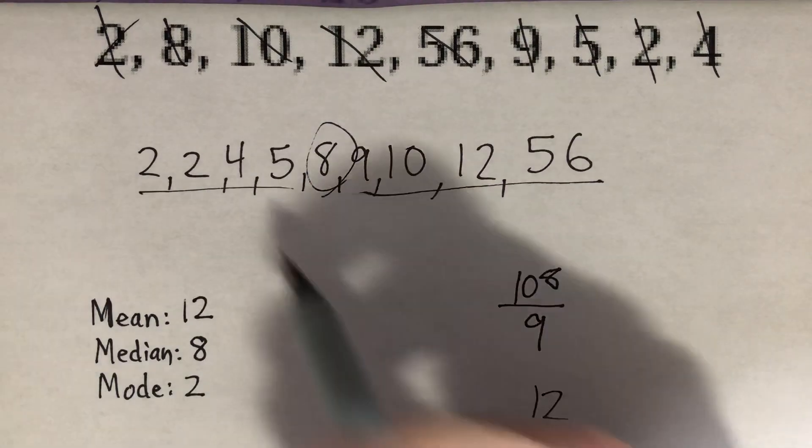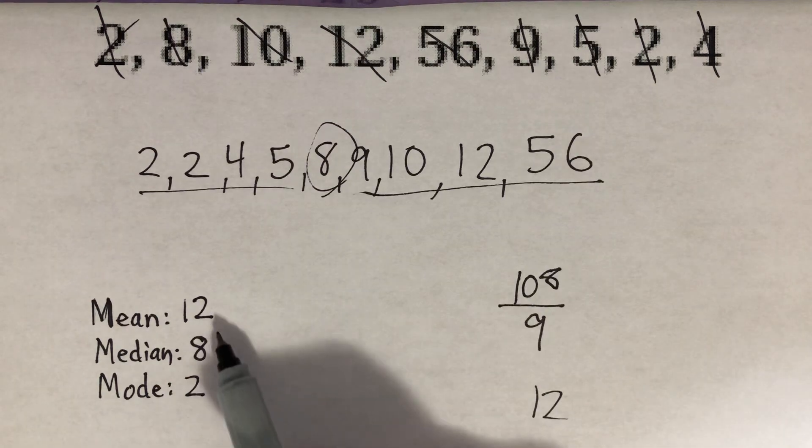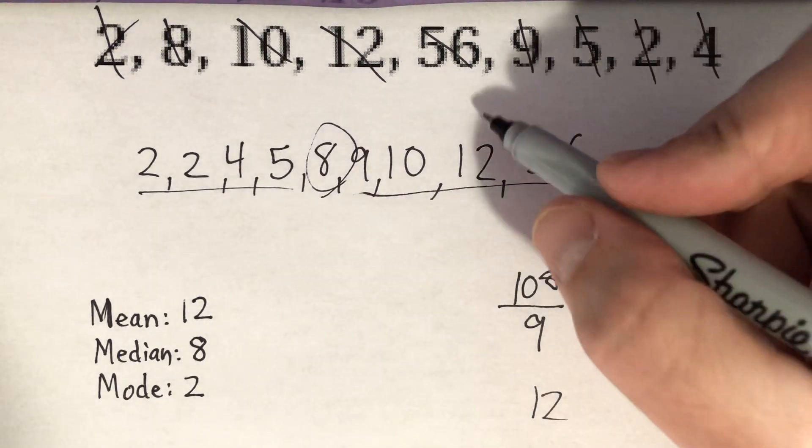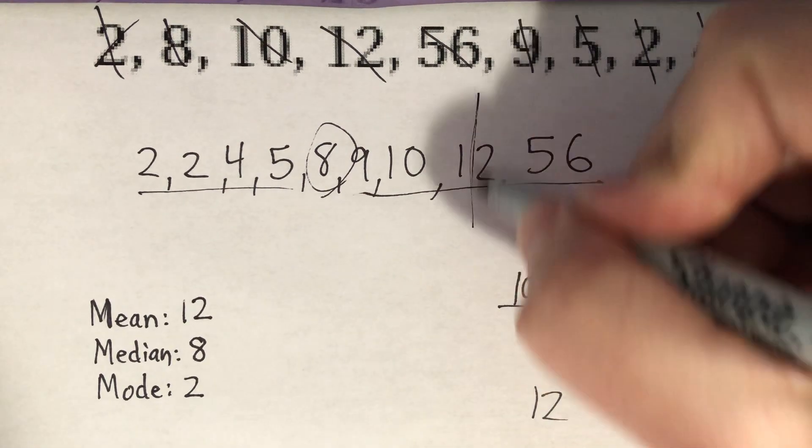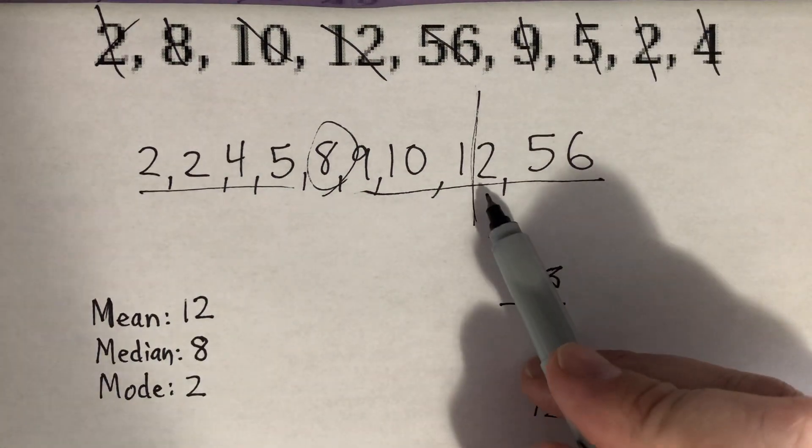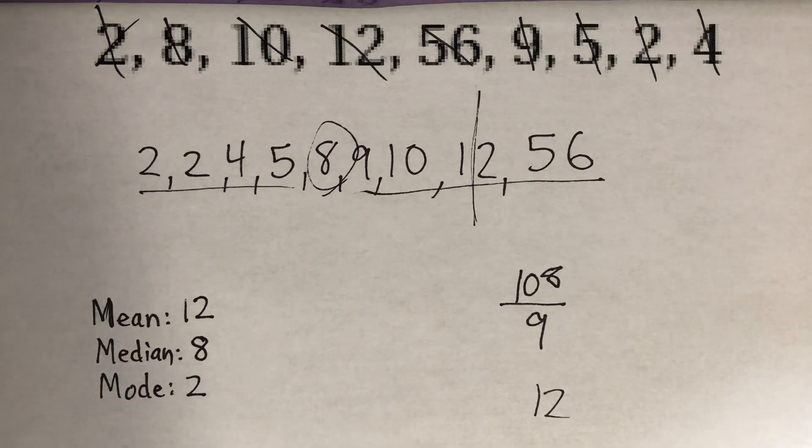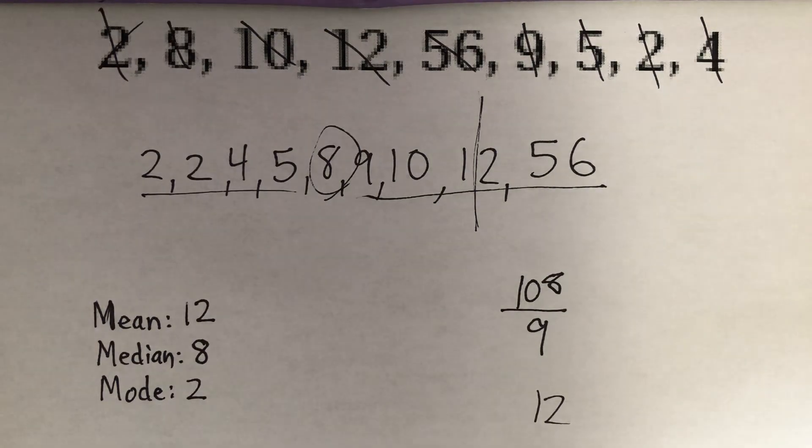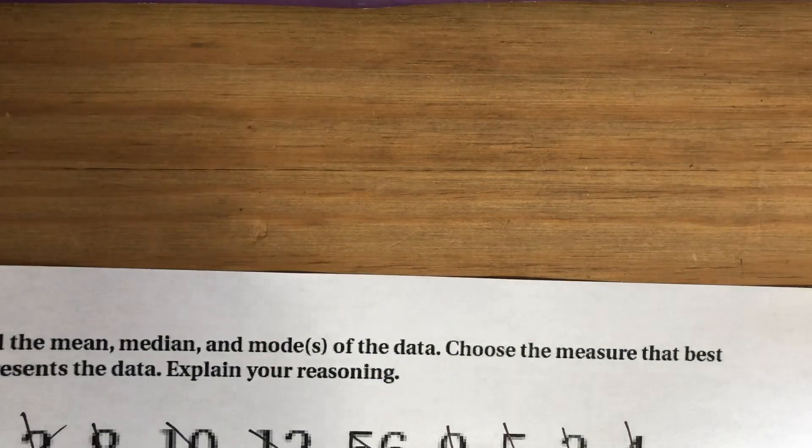And you can see that this is where the numbers cluster. And then that number really dragged that mean up. In fact, there's no way that my mean should be this far to the right of my data, representing 12, because it means most of that is way lower than that. So in this situation, again, the median is going to best represent our data. Now, keep in mind, both of these examples had outliers. And that's why that was the case. And this next example, we'll do the same thing.